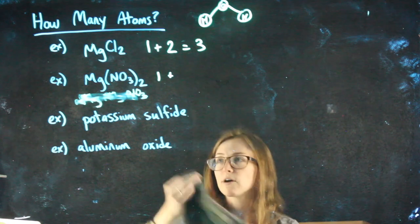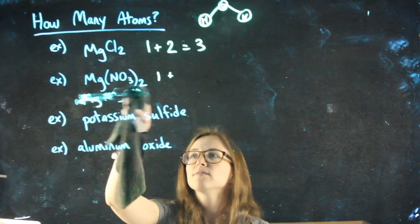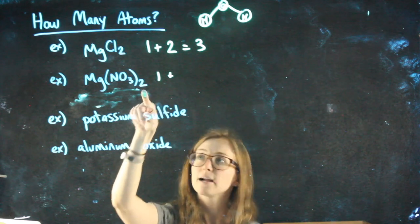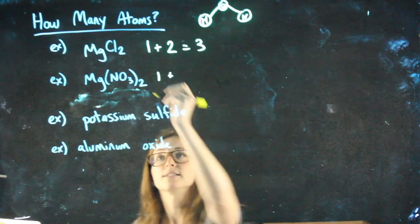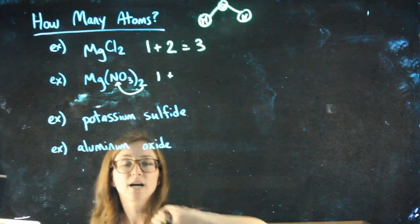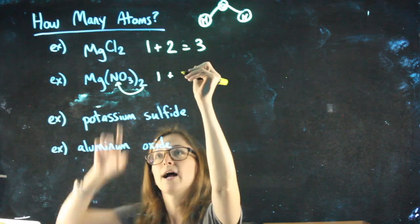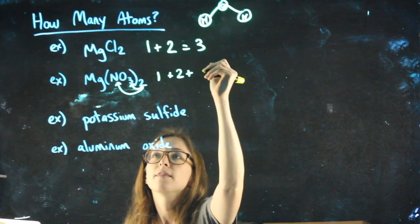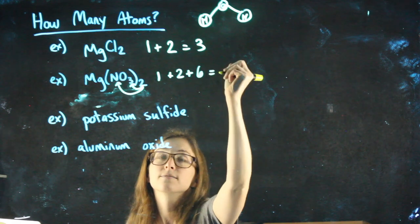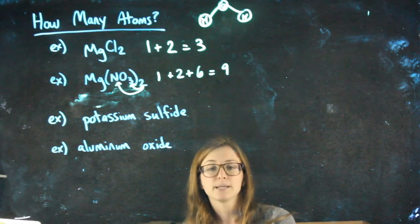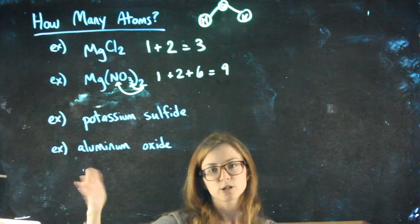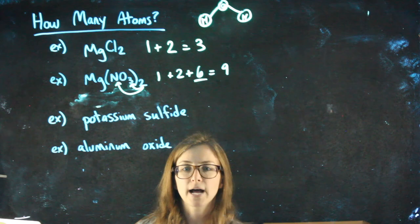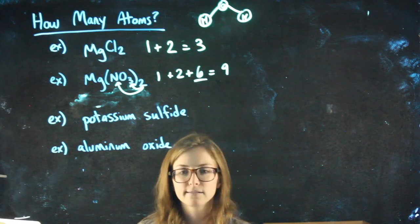What I actually suggest you doing, rather than writing things out an excessive number of times, is realize that what's happening is this two is multiplying by whatever numbers we had inside the parentheses. It distributes two times whatever nitrogens I had, so I had one times two, and two times the number of oxygens, six. So I have nine atoms in magnesium nitrate. I could ask you more specifically, well, how many oxygen atoms are there? Well, six oxygen atoms were part of my nine atoms total.